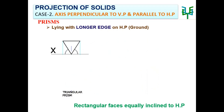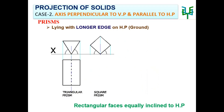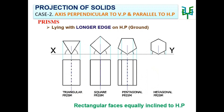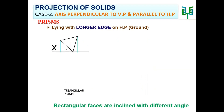Example: Triangular prism with equal inclination. While lying on the ground with its longer edge, the rectangular faces may also have different inclinations. Example: Triangular prism with different inclination.